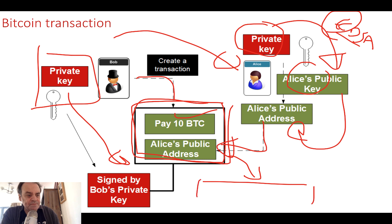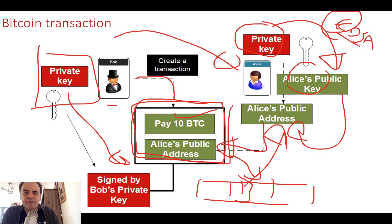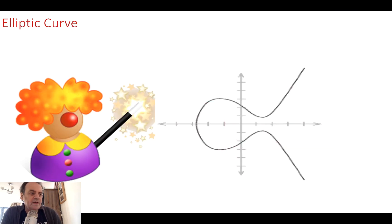Bob needs to make sure that he doesn't lose his private key. The transaction is then added to the blockchain and within 10 minutes or so it's hopefully approved by the miners, and now Alice will have 10 more bitcoins in her account and Bob will have 10 less. The private key is the core of it.